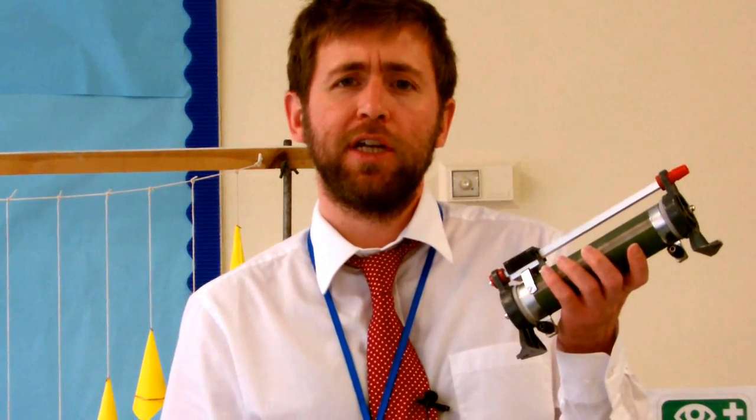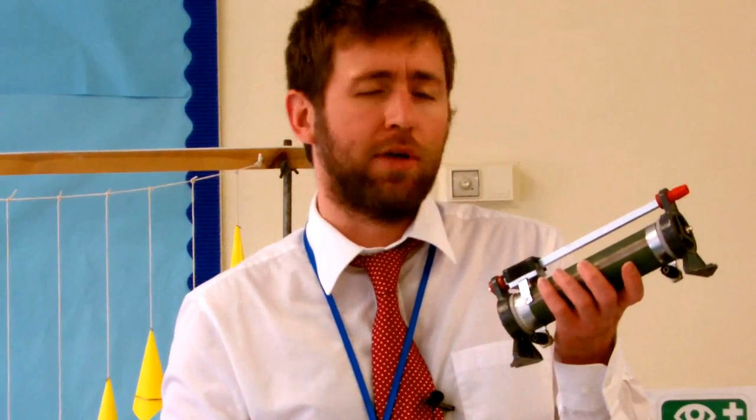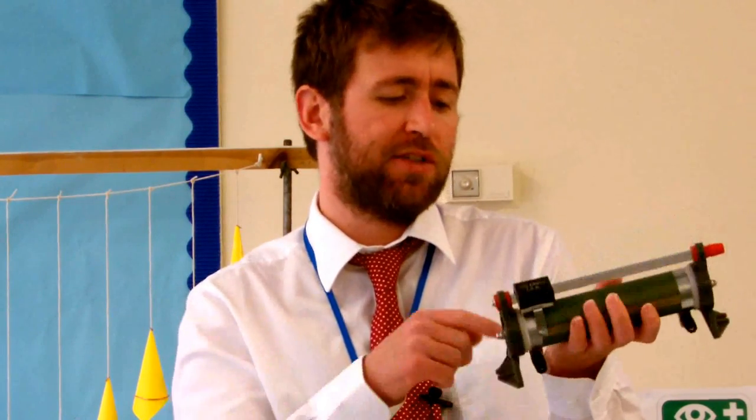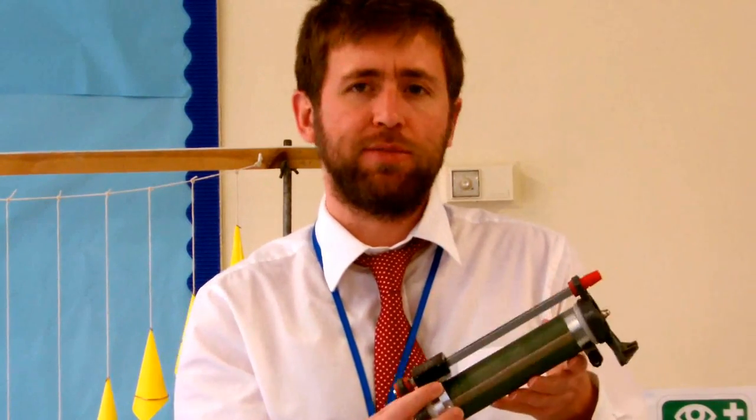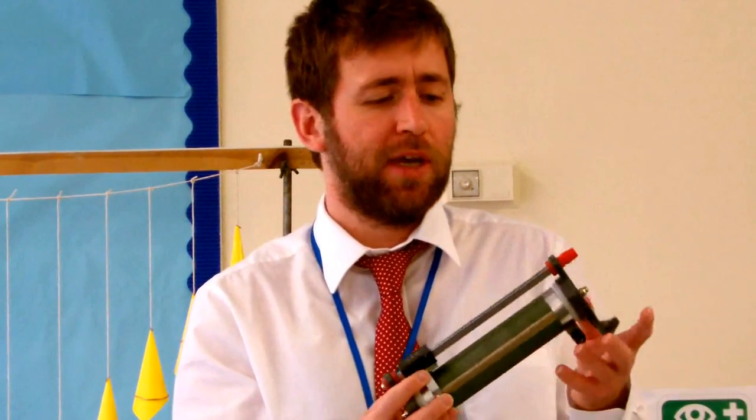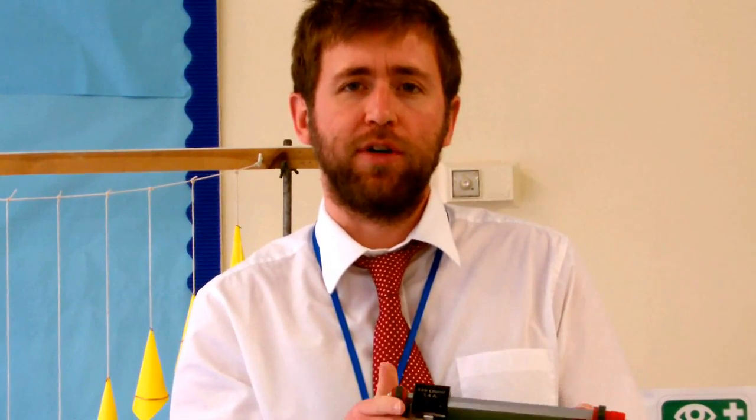The variable resistor is just like the piece of wire that we had on the ruler in the previous experiment. It's just coiled around so it's a bit more compact. It is the same principle as a standard potentiometer. And this one goes from 0 Ohms all the way to 135 Ohms.